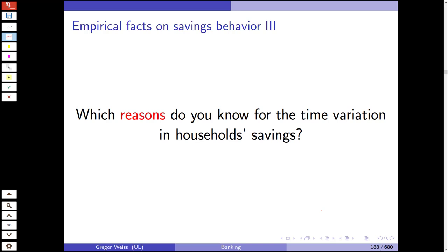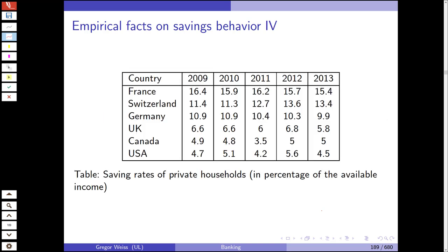Savings rates also vary across countries. Looking at average savings rates as a percentage of available income, it was highest in France at almost 16–17%, second was Switzerland at 11 up to almost 14%, then Germany, UK, Canada, and the USA having the lowest savings rate.